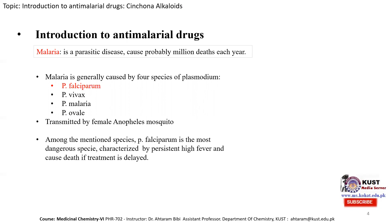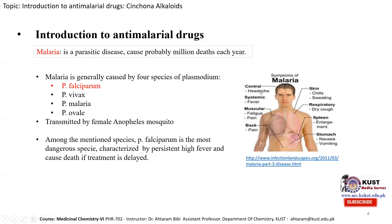Among the four species, Plasmodium falciparum is the most dangerous and is generally characterized by persistent high fever; it causes death if treatment is delayed. Common symptoms of malaria include central headache, systematic fever which may repeat after 4 or 24 hours, muscular pain, back pain, skin chills, and sweating. Some respiratory problems such as dry cough and stomach problems such as nausea and vomiting also occur.